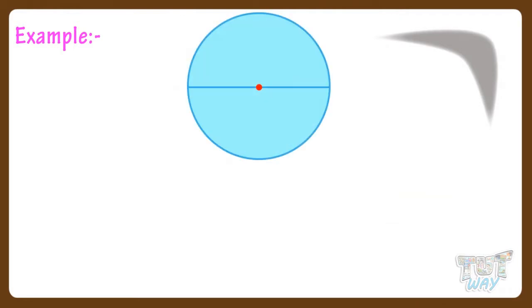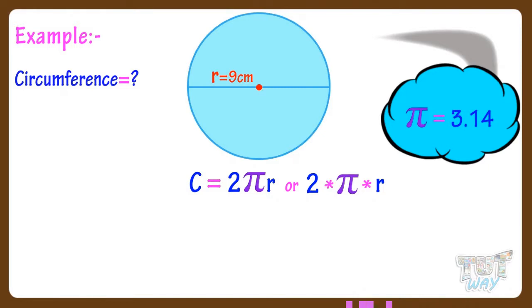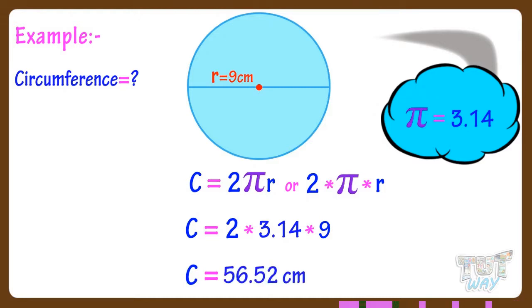Let's take an example. Here we have a circle and we are given its radius — it is 9 centimeters. Let's find out the circumference of this circle. We know circumference equals 2πr, that is 2 multiplied by π multiplied by r. We have r equals 9 centimeters and π equals 3.14. So circumference equals 2 × 3.14 × 9, which gives us 56.52 centimeters. So the circumference of this circle equals 56.52 centimeters.